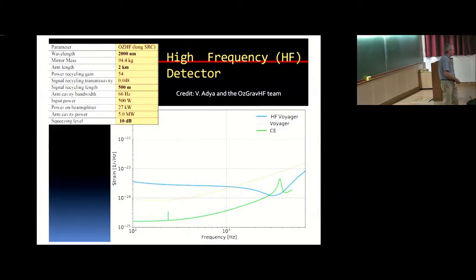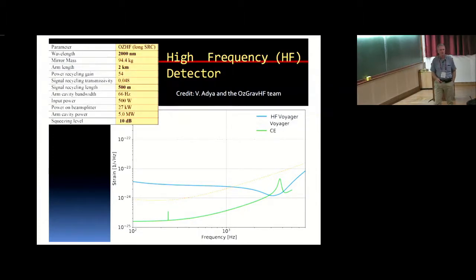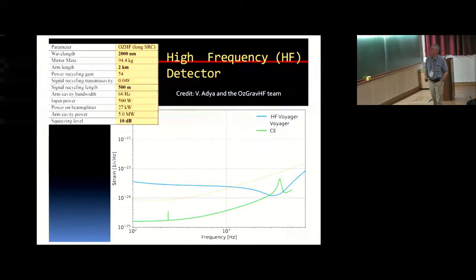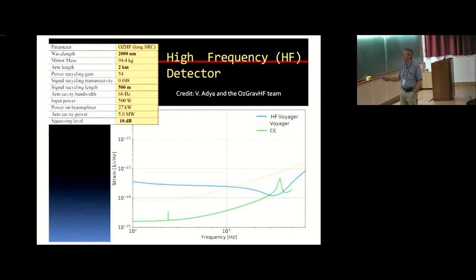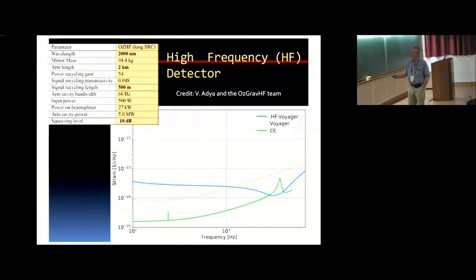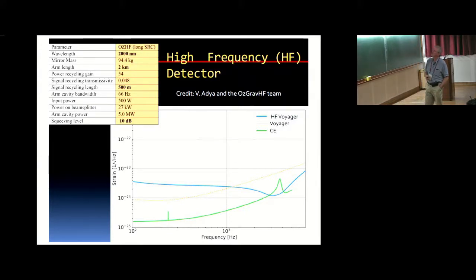For example, high-frequency detectors — first developed by people like Martin Ando — we've been looking at this within NEMO/NEMO-HF. You take the Voyager technology but don't worry about low frequencies, and you see what you can try to do at high frequencies in the matter region where you're looking for binary neutron star equations of state. Here is a high-frequency Voyager curve — let me make sure — for a four-kilometer detector.